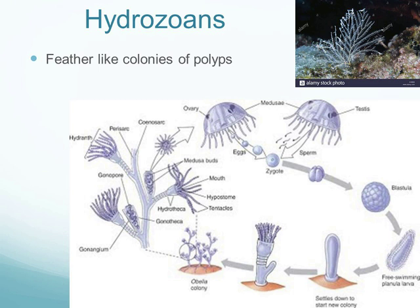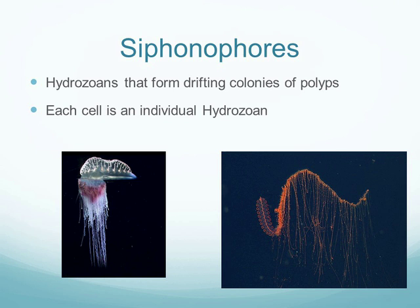During reproduction, hydrozoans create a zygote that becomes a larva called a planula, which settles and seeks suitable habitat — meaning sufficient nutrients, water flow, oxygen, and no competing organisms. They grow into adults living on stocks with small protective homes from which they extend their tentacles to feed.